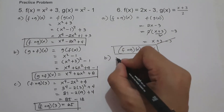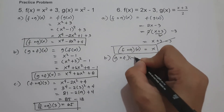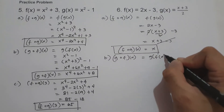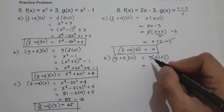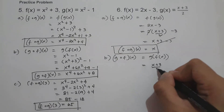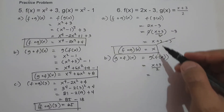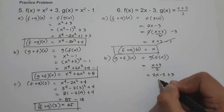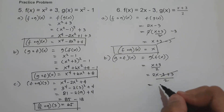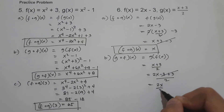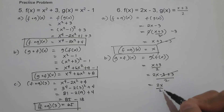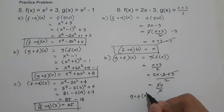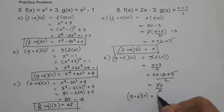On letter b, let us have g circle of f of x, and that is g of f of x. The value of g is x plus 3 all over 2, and the value of x is f of x, which is 2x minus 3. So we have 2x minus 3 plus 3 all over 2, which gives us 2x over 2. Dividing, the 2s cancel, and the value of g circle of f of x is also x.